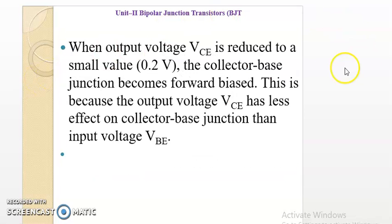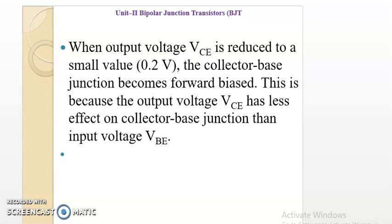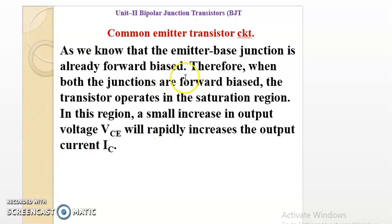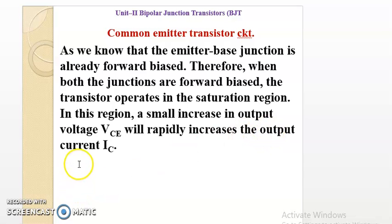When the output voltage VCE is reduced to a small value, the collector-base junction becomes forward biased, because VCE has less effect on the collector-base junction than the input voltage VBE. Since the emitter-base junction is already forward biased, when both junctions are forward biased, the transistor operates in the saturation region. In this region, a small increase in VCE causes a rapid increase in output current.